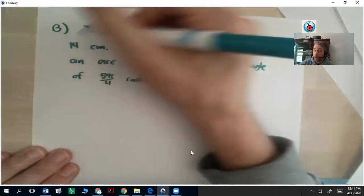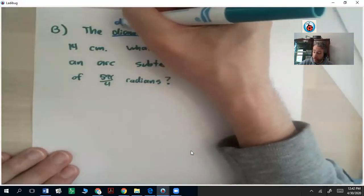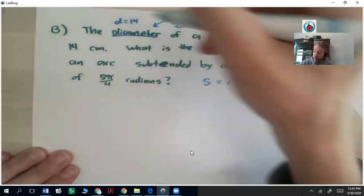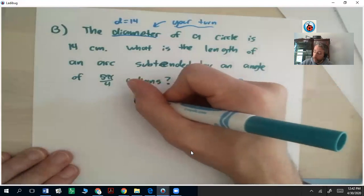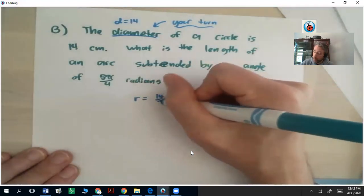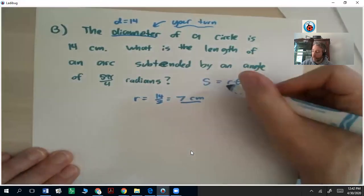In this problem, they give you the diameter. So the first thing you should do if you're given the diameter in the circle is cut it in half. Since the diameter is equal to 14, that means the radius is going to be 14 divided by 2, which we know is 7. So your radius is 7. That's your r value.